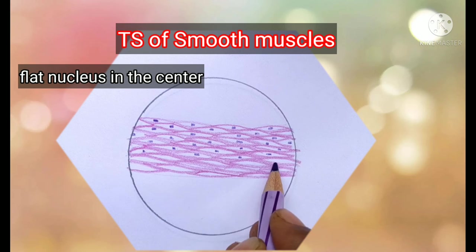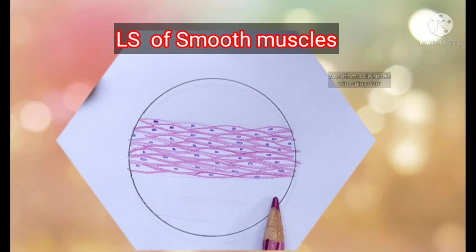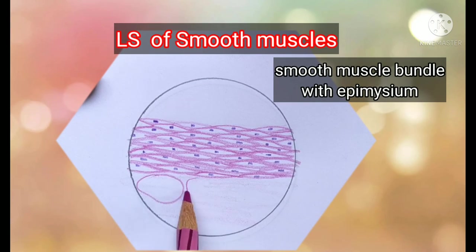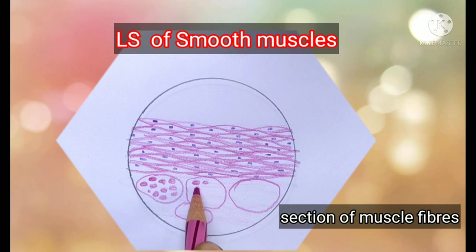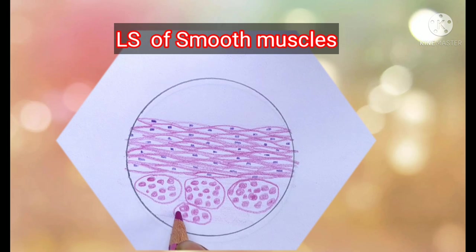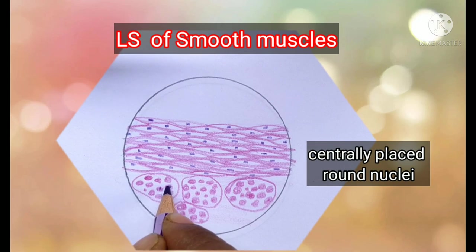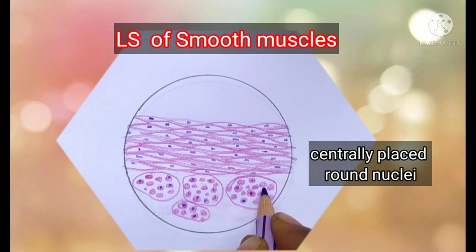In longitudinal section, smooth muscles are arranged in muscle fascicles or bundles covered by perimysium. In transverse section, the diameter of the cut profile varies depending on where the section passes: if through the center, you get a wider circle with a visible nucleus; if through the periphery, you get a thin circle with no nucleus visible. So smooth muscle cross-sections need not be equal in size, but only the larger central ones will show a nucleus.